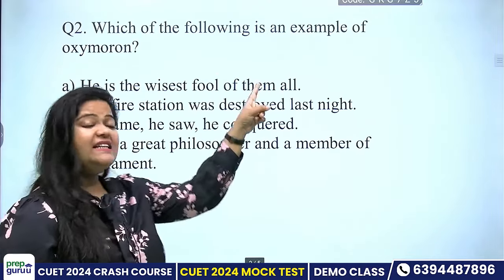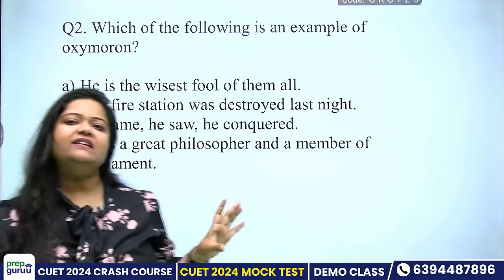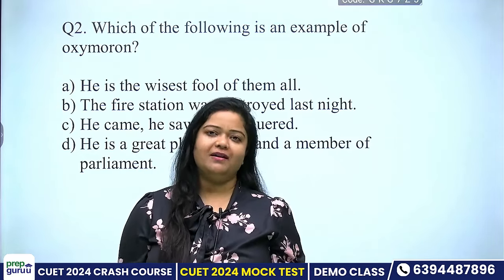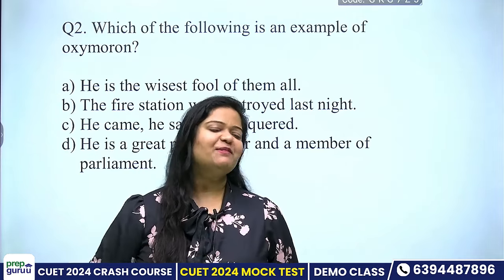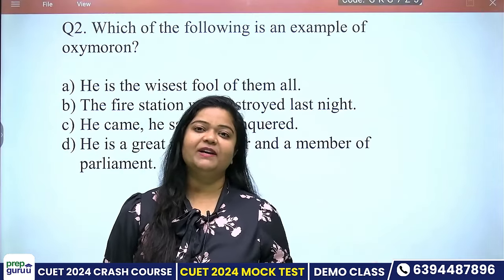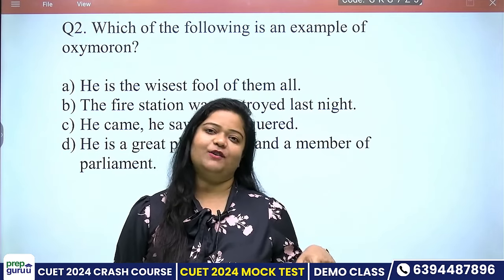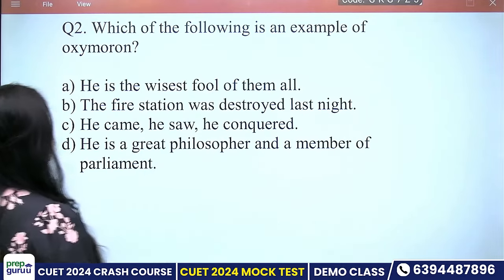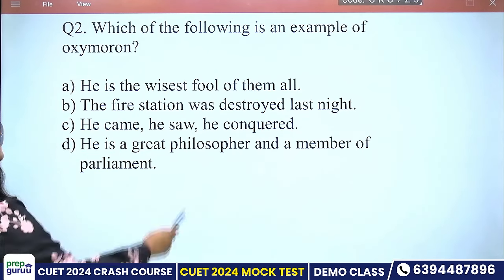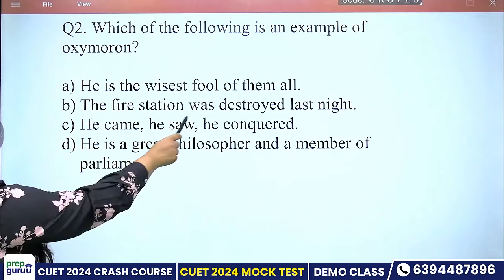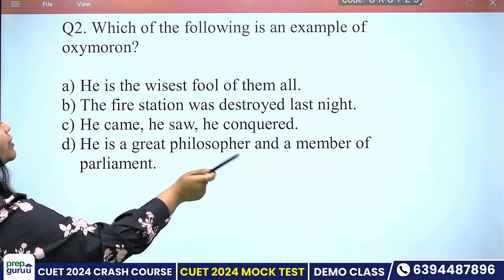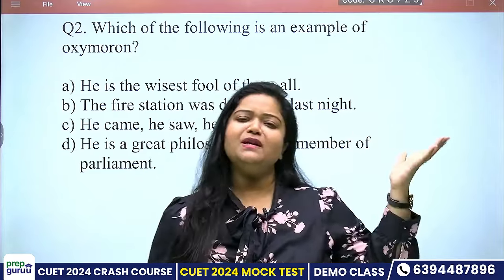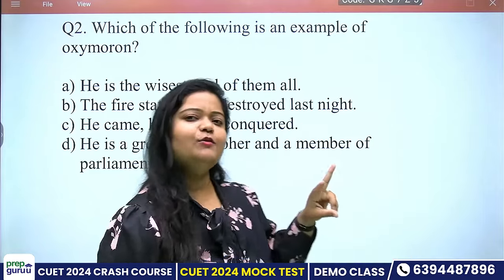Next: which of the following is an example of oxymoron? Oxymoron means using two words of opposite meaning together. For example, many people consider 'happily married' an oxymoron. Another example is 'liquid oxygen' — liquid and oxygen seem contradictory. 'Happy death' is also an oxymoron. The answer here is 'he is the wisest fool of them all' — wise and fool are opposites used together. That is oxymoron.